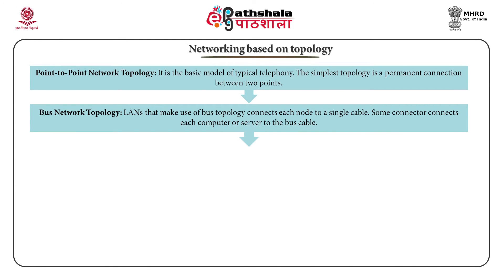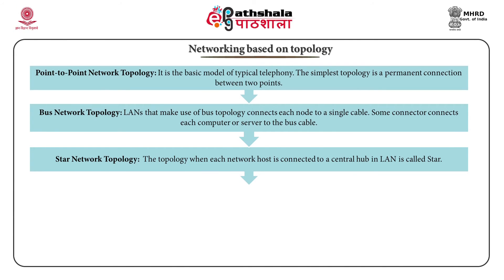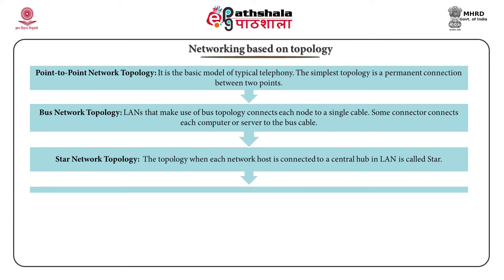Bus network topology: when LANs join each node to a single cable, bus network topology is used. A connector links each computer or server to the bus cable. The starting place passes on a signal that travels in both directions through all the machines until it arrives at the projected recipient with the matching IP address. The data is ignored if the IP address does not match. Star network topology: when each network host is joined to a central hub, it is called star network topology. Each node is linked to the hub with a point-to-point connection, and all signals move through the hub, which serves as a signal booster.